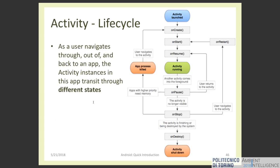This is the entire lifecycle of an activity. You should design your application keeping in mind that it can be paused, stopped, and then resumed. You should save temporary data. For example, if you're writing a message in your application and then receive a WhatsApp message and reply to it, when you come back to your application you should design it to restore the message you were writing before. This is the key point.